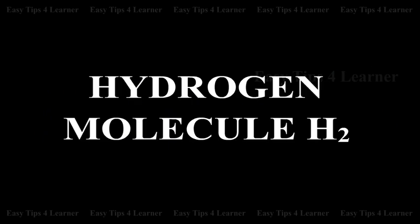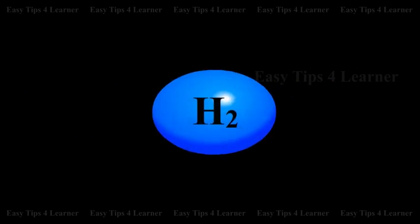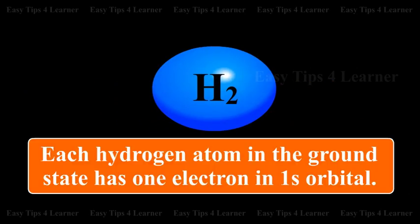Hydrogen Molecule H2. It is formed by the combination of two hydrogen atoms. Each hydrogen atom in the ground state has one electron in 1s orbital.